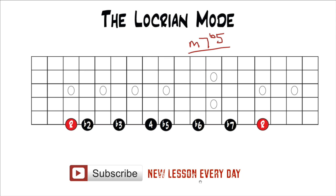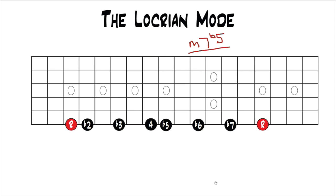The minor 7 flat 5 is what you'll find in jazz and more advanced blues or more advanced music, but in regular pop music you're almost never going to run across it. When you're playing this mode over a chord, the minor 7 flat 5 is the best one to play it over because it's the most common chord you'll come across and it's a more consonant sounding chord than the diminished triad. So the best thing to do is to play it over a minor 7 flat 5. The avoid note with the Locrian mode is the flat 2.